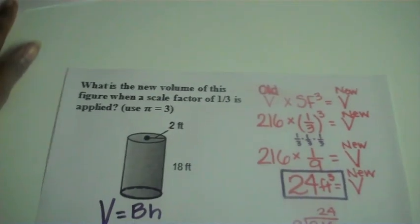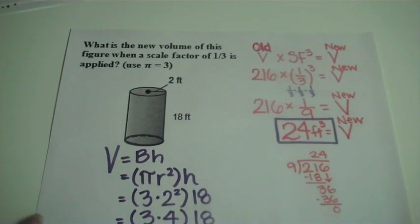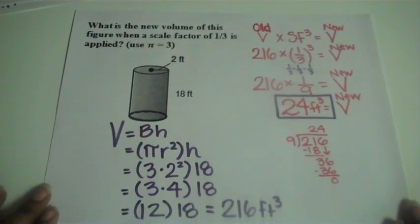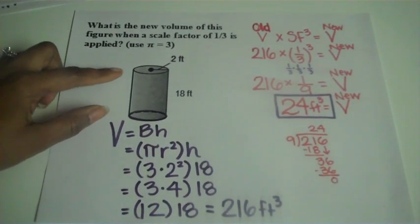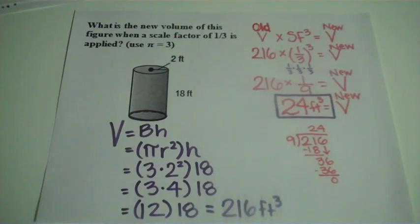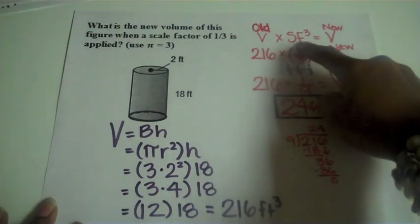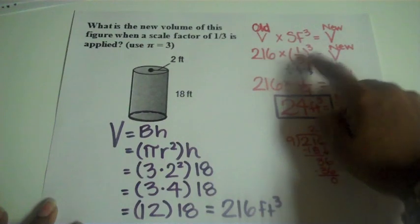Alright, so in example 3, you're finding the new volume of this cylinder when a scale factor of 1 third is applied. And it says that you can use pi is 3 to make this go a little bit quicker for you. Now I'm not going to go over how to find the volume of this cylinder. You should already know that. If you need to, you can refer back to the volume videos.